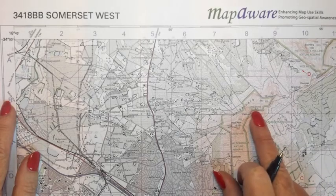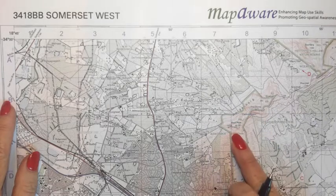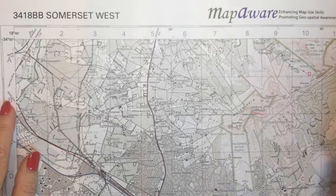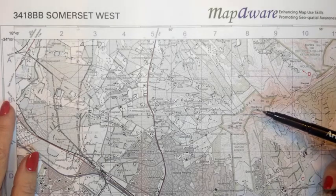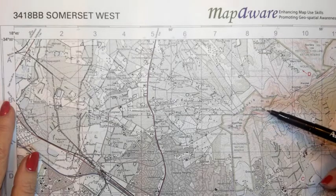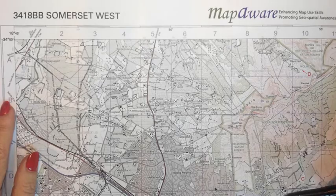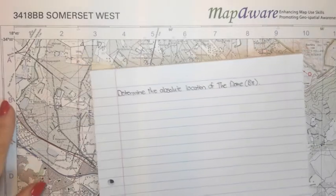If you look here you can see there is the dome. The dome is a peak in this mountain range. What map symbol do we associate with the dome? You will see there is a trig beacon, so we need to use that trig beacon and not the name 'the dome' for our calculations. As I said in the presentation, you need eight pieces of information to calculate absolute location.